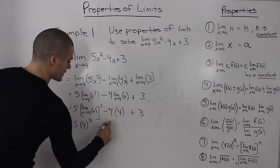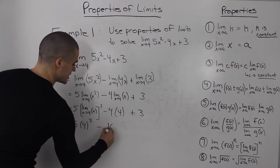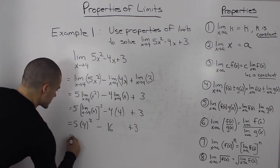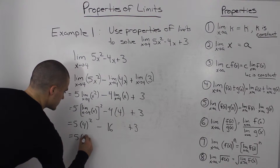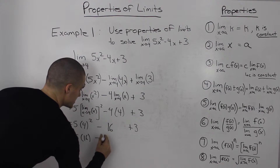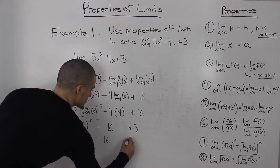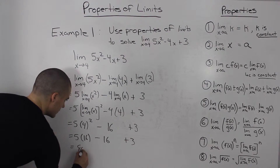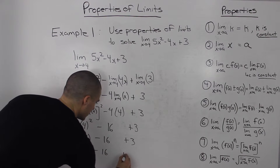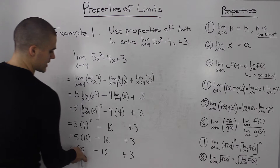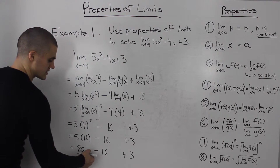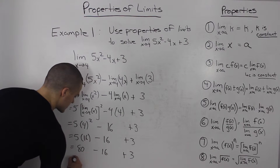Using Property 2, the limit as x approaches 4 of x equals 4. So we have 5 times 4 squared, minus 4 times 4, plus 3. That gives us 5 times 16, minus 16, plus 3. 5 times 16 is 80, minus 16 gives 64, and 64 plus 3 gives a final answer of 67.